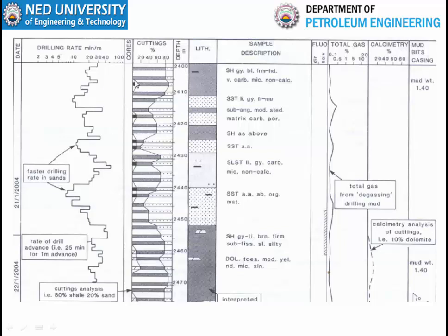Along with cuttings and their description, the drilling rate is mentioned — for example, around 30 minutes per meter — and it may increase or decrease. The total gas measured at a particular depth is also reported; this gas is measured from the drilling mud after recovering gas from it. Calcimetry, mud bit, casing, and other properties are also reported in a given mud log.